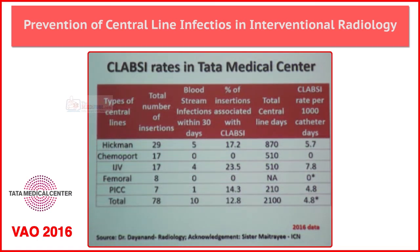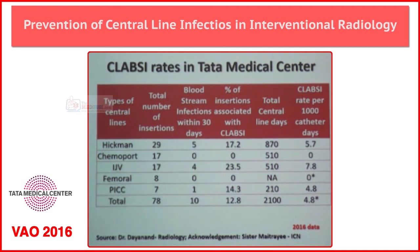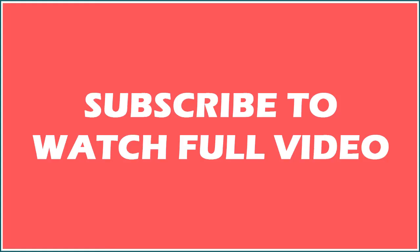During this time period, 29 Hickman lines were inserted, 17 each of chemoports and IJVs, followed by femoral lines and PICC lines. We were looking at the bloodstream infection rates — specifically 30-day bloodstream infection. In fact...